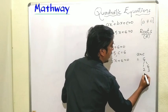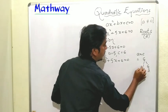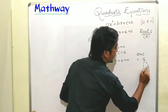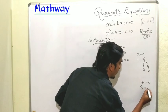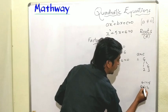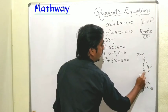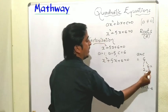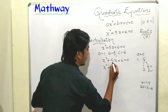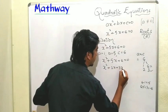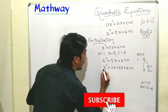Checking the pair 6 and minus 1: 6 minus 1 is 5, but their product is minus 6, not plus 6, so this pair doesn't work. Checking 2 and 3: 2 plus 3 is 5 and 2 times 3 is 6 — this pair works. So we split 5x into 2x + 3x, giving x² + 2x + 3x + 6 = 0.